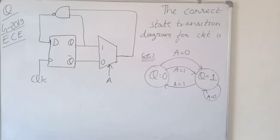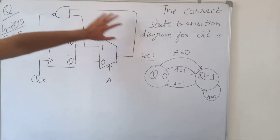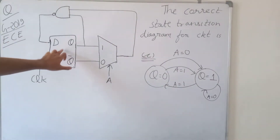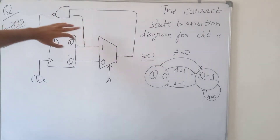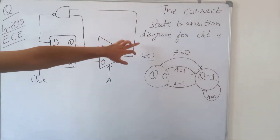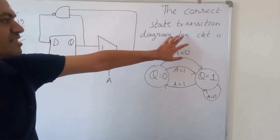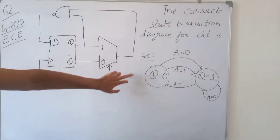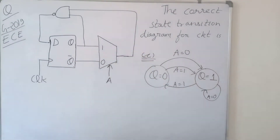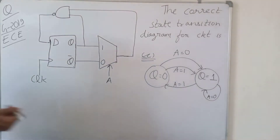Welcome. We are solving a question from GATE 2019 Electronics branch. We are given a circuit with a D flip-flop, a multiplexer, and a NAND gate, and we have to find the correct state transition diagram for this circuit. This is the correct option and we will prove it.